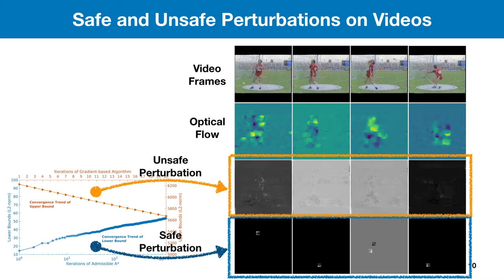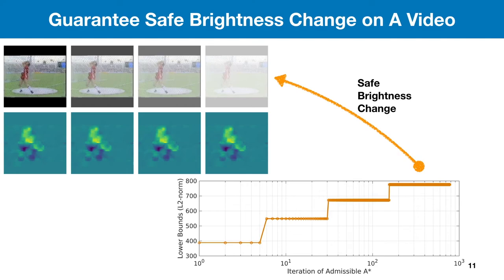Here we show the convergence trend of these bounds. For instance, we sample some frames from a hammer throw video and extract an optical flow sequence. By computing the bounds, we obtain the unsafe perturbations imposed on the flow corresponding to the upper bounds, and the safe perturbations reflected from the lower bounds. For more naturally possible perturbations, we take brightness change as an example. We can guarantee that any degree of brightness change, as long as it is below the lower bounds, is definitely safe — in other words, it will not cause a misclassification.